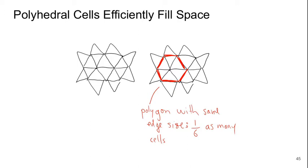And on the right we see, overset on that, in red, a six-sided polygon that has the same edge size but one-sixth as many cells. We can see that polyhedral cells are very efficient. This is what will be used in the meshes you'll be generating for your SimScale labs throughout this course.